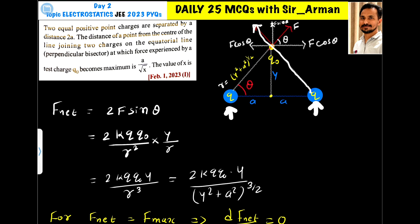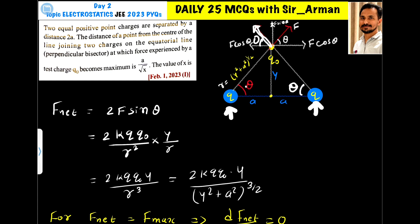The force exerted by the second charge on the test charge is also f, since both charges are equal. This force also has two components: f cos theta and f sine theta. The f cos theta components from both charges cancel each other out, but the f sine theta components add together.